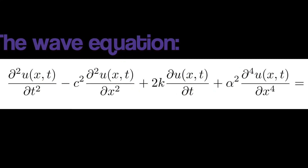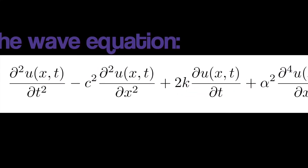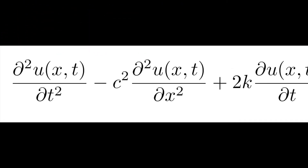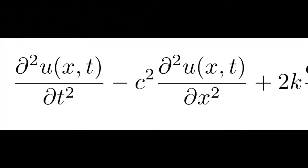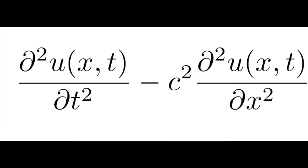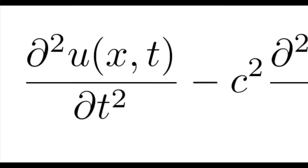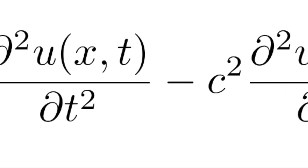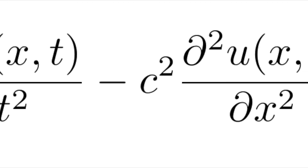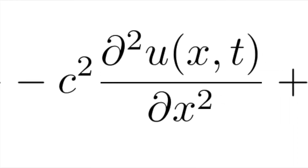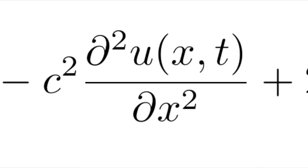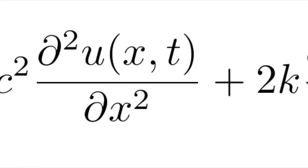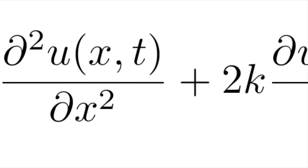Let's review what we have done in the previous two videos. When we studied the wave equation of the ideal guitar string, we intentionally ignored stiffness and damping — this ideal model only considered the force of tension. The first term of the wave equation is related to the acceleration of a point on the string, and the second term is related to the bending of the string. Then we added a term that modeled the dissipation of string energy as a force opposing the velocity of the string, related to the constant k.